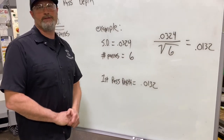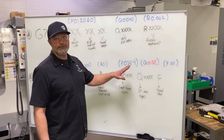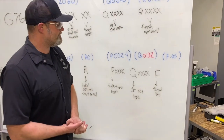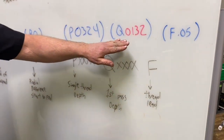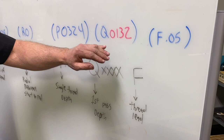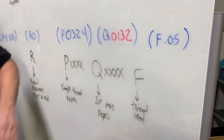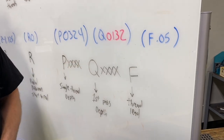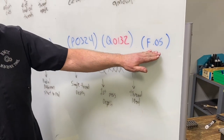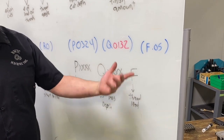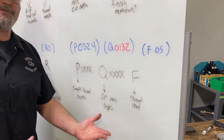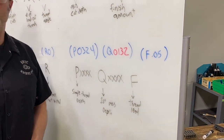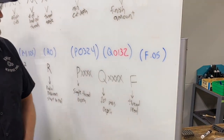Back to our second line of canned cycle — the Q letter address is our first pass depth, entered as Q-0132 with no decimal point. The final letter address is F, our feed rate, which does require a decimal point. That is essentially the lead of the thread — how much it advances per revolution, or feed per revolution. On our particular part it's a single lead, so the lead equals the pitch: 50 thousandths per revolution.